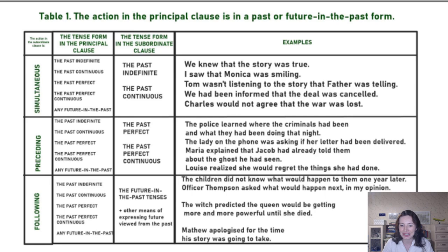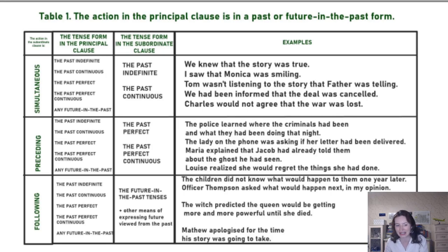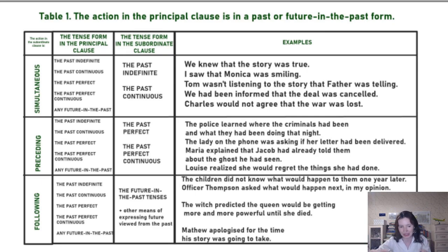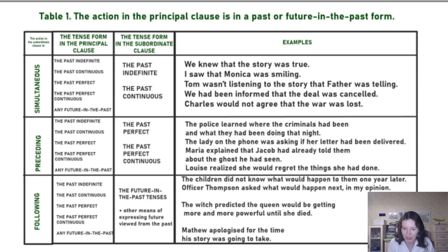'The witch predicted the queen would be getting more and more powerful until she died.' Here we have the natural course of events — she will be getting more and more powerful — but we put it into the deeper past. From the point of view of the witch it's the future, but for us it's not. So the action that follows is expressed with a future-in-the-past form.